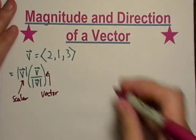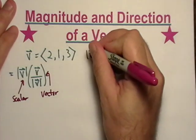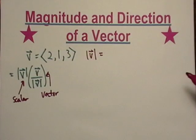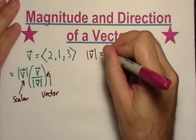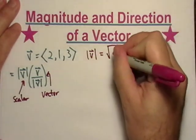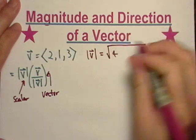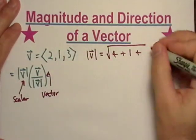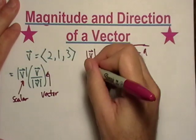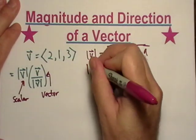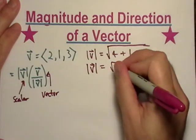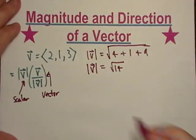So let's go ahead and figure this out. Let's find the magnitude. I'm going to take the square root of the sum of the squares of the components — so that's two squared plus one squared plus three squared — which gives me the square root of 14.